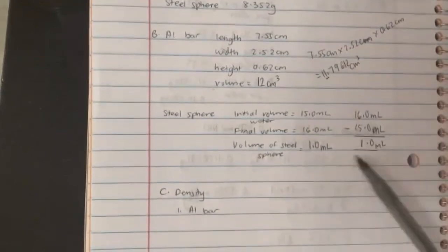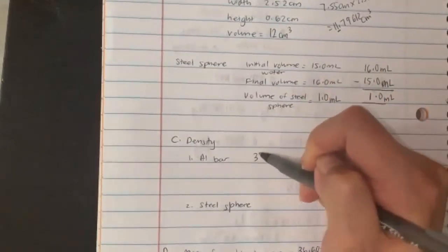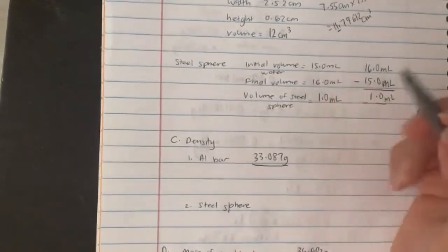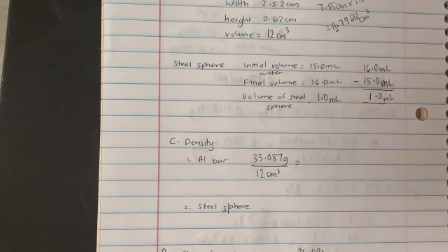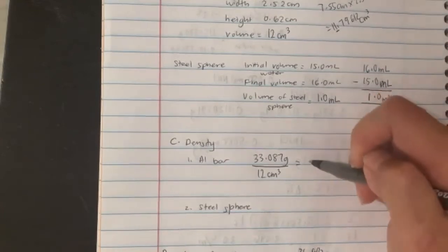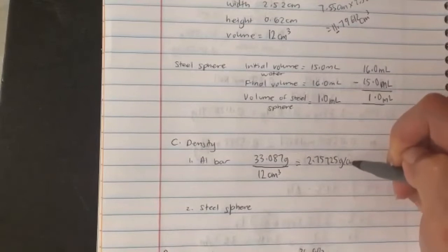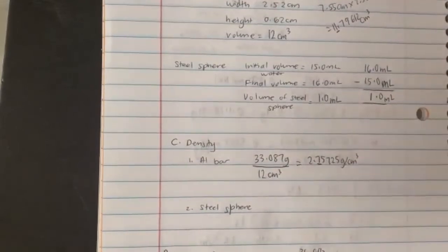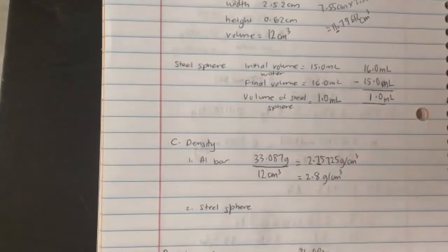For aluminum, we take 33.087 grams divided by 12. I have five sig figs here and two sig figs here, so I'll keep only two sig figs in my answer. 33.087 divided by 12 gives 2.757 grams per centimeters cubed. However, I only keep two sig figs, so the answer is 2.8 grams per centimeters cubed.